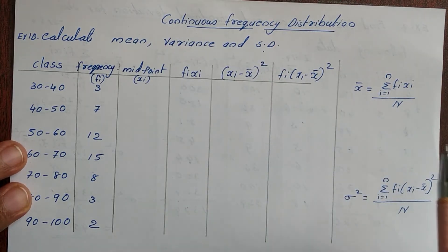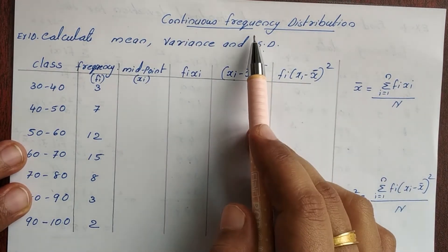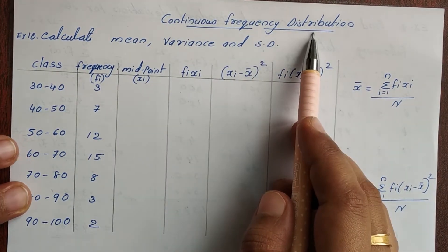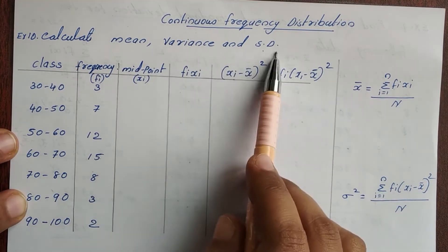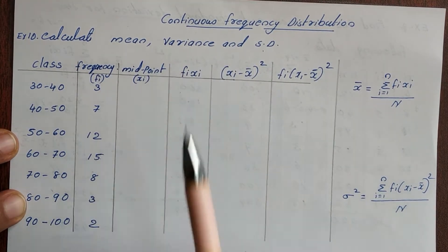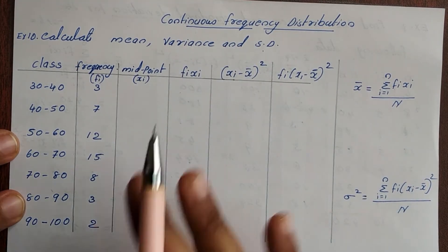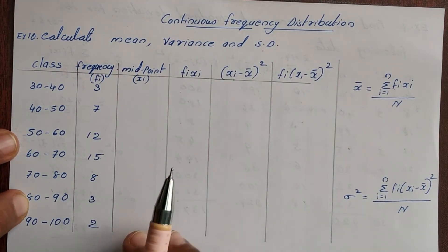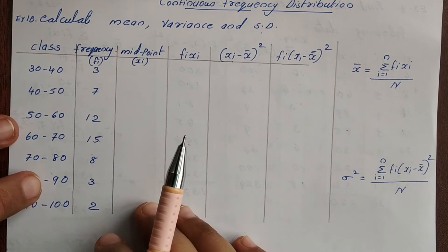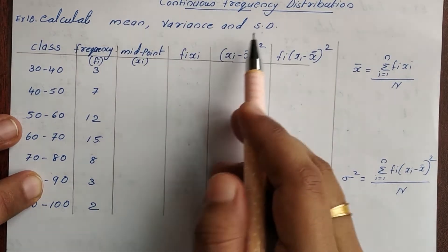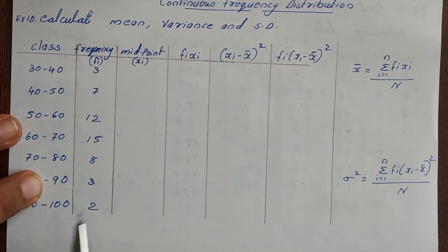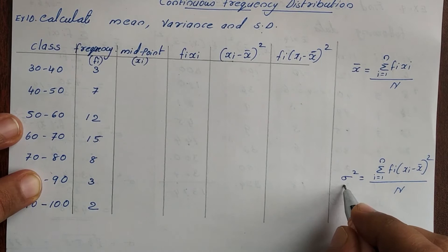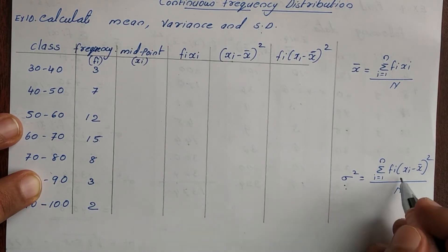Hi! This video is called continuous frequency distribution. Let's take a look at the mean, standard deviation, and variance. First, let's take a look at the direct method — specifically the standard deviation and variance.